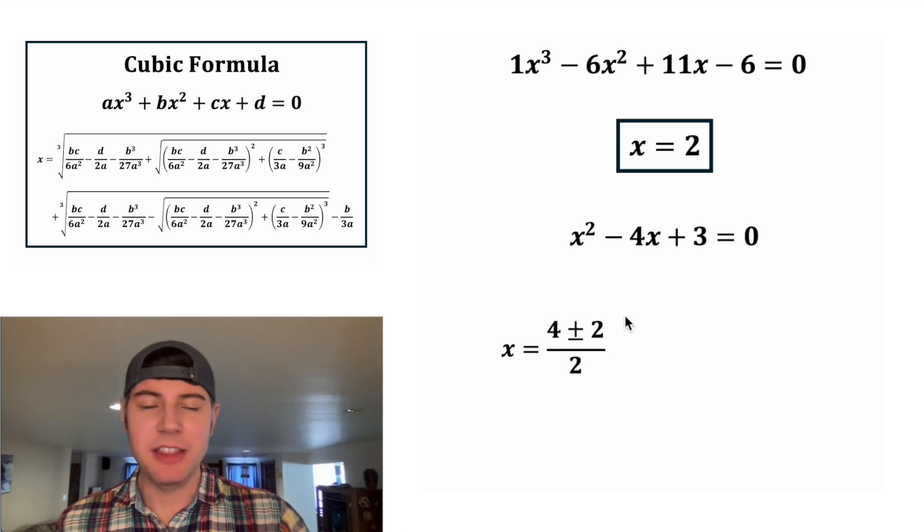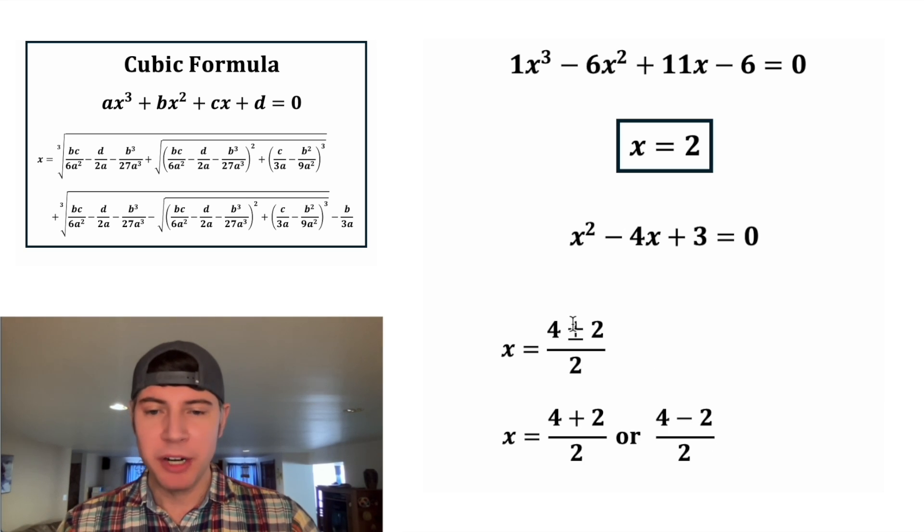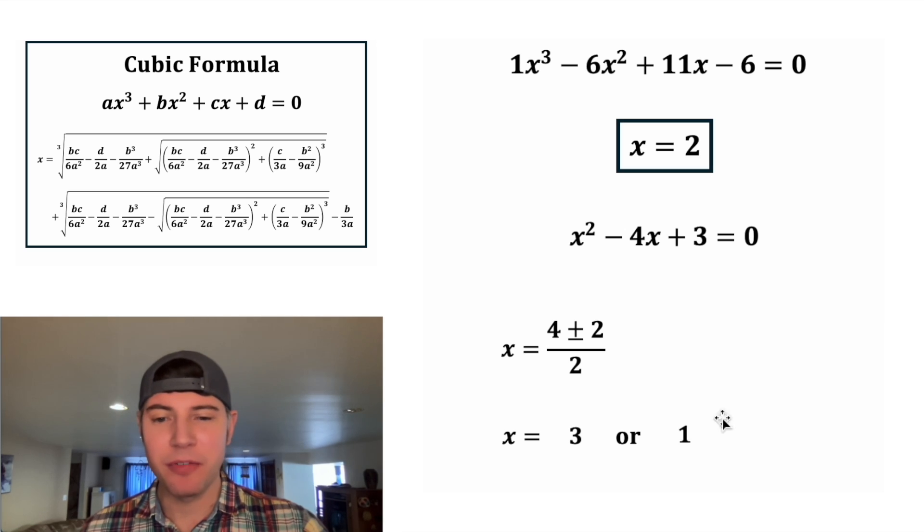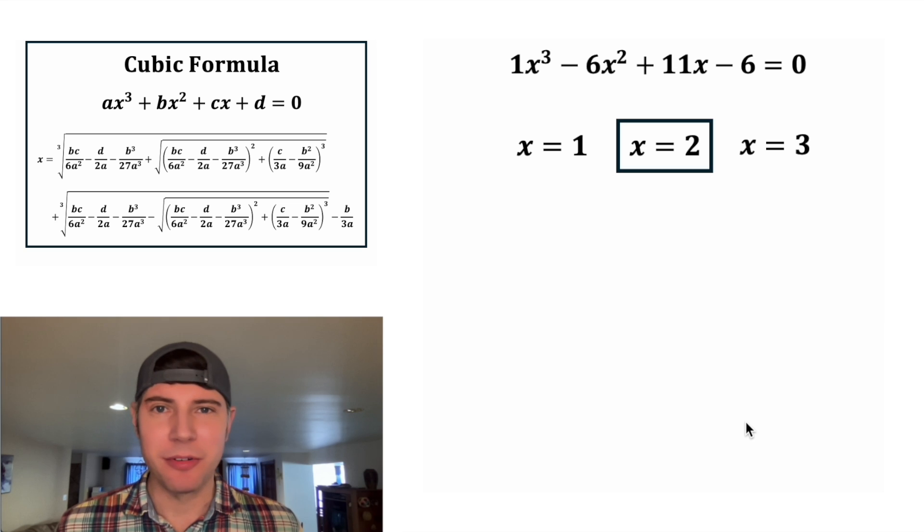We can smush everything together. And this will give us two answers. One answer for the plus and one answer for the minus. 4 plus 2 is 6 divided by 2 is 3. And 4 minus 2 is 2 divided by 2 is 1. And this is how we find the 3 and the 1. And we can move them up here with our friend.